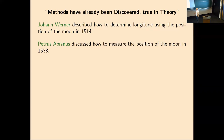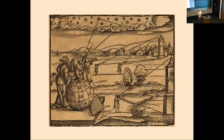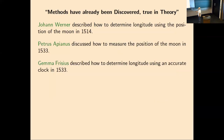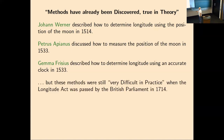The methods had been discovered, true in theory — that kind of sounds like quantum computing. Already 200 years earlier, Johann Werner had figured out how to determine longitude using the position of the moon, and Gemma Frisius had described how to determine longitude if you had an accurate clock in 1533. But these methods were still very difficult in practice when the Longitude Act was passed by the British Parliament in 1714.